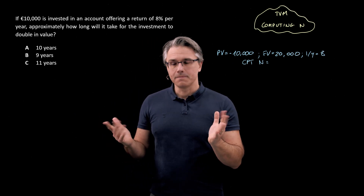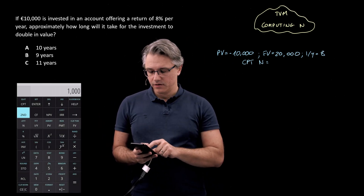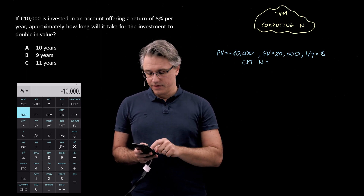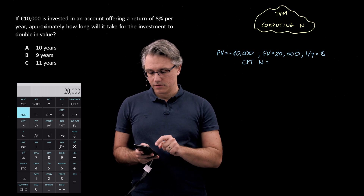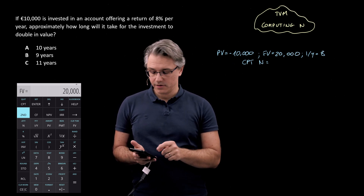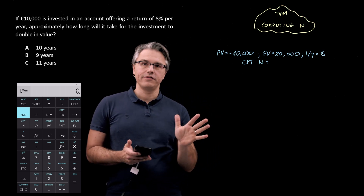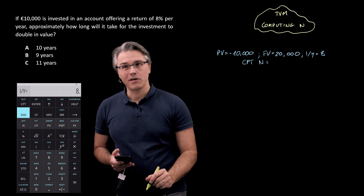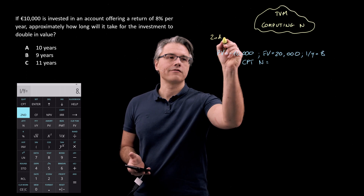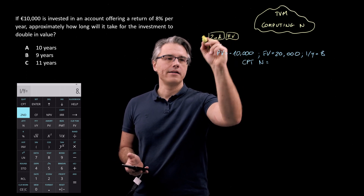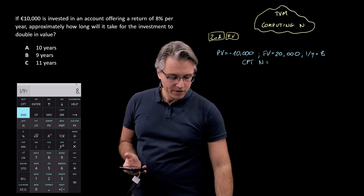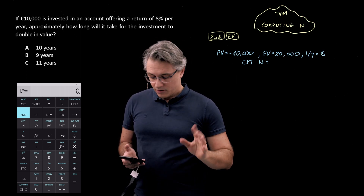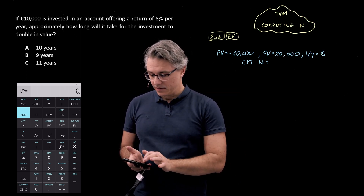So let's get the calculator. Let's begin with PV: enter 10,000 followed by the plus/minus key, and now make this the PV input. FV: enter 20,000 followed by FV — no change to the sign. And enter 8 for I/Y. One thing I should mention: always before you start working with the calculator, it's a really good idea to press 2nd followed by the FV key, just to clear the time value of money worksheet of any inputs sitting there from previous problems. And let's compute for N — CPT, N.